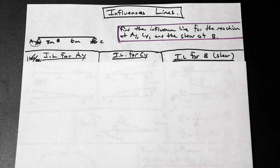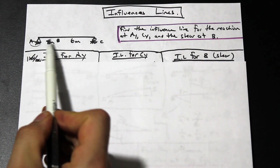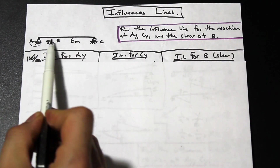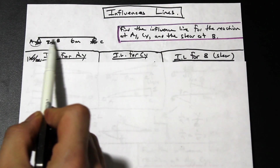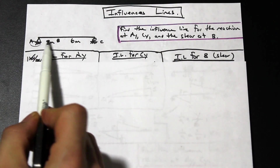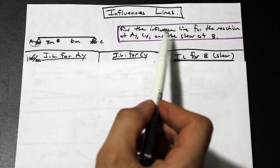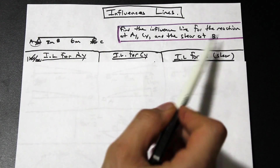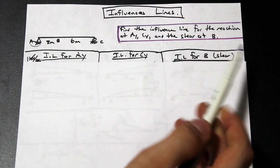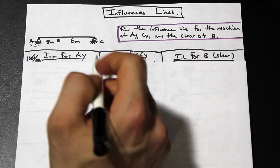Let's take a look at our beam here. We have beam ABC — B is three meters to the right of A. The question asks us to find the influence line for the reaction at AY, CY, and the shear at B.